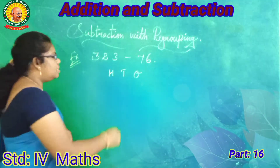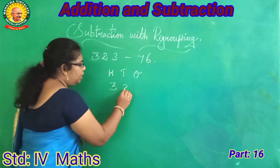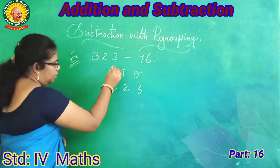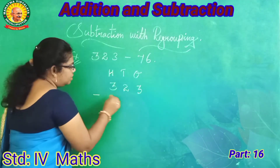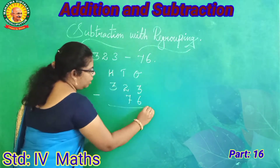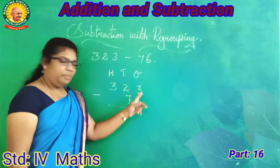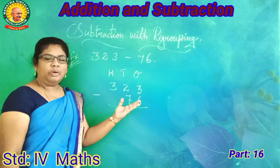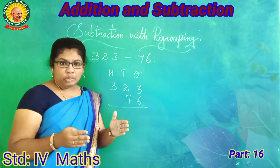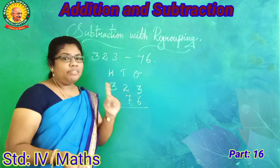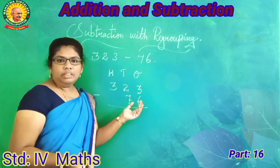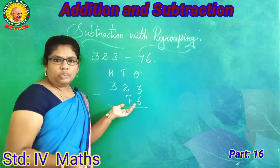The minuend is 323, minus 76. What do you do? Subtract. The bigger value is the top value, and the smaller value is the bottom value.